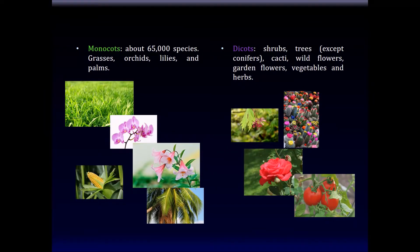Let's talk about the differences between a monocot and a dicot. From a seed point of view, a monocot has one cotyledon and a dicot has two cotyledons. But there are other distinctive features in their leaves, stems, flowers, and roots. Monocot leaves usually have veins that are parallel, whereas dicot leaves have veins that are branched. In regards to stems, monocot stems have vascular bundles in a complex scattered arrangement, whereas in dicots the vascular bundles are arranged in a ring form.